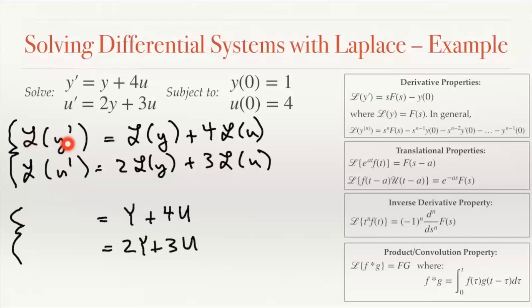The Laplace transform of little y we'll call big Y, and the Laplace transform of little u we'll call big U. For the Laplace transform of y prime, we use the derivative property: that gives s·Y minus y(0). Since y(0) equals 1, and the Laplace transform of u prime is s·U minus u(0), and u(0) equals 4. So we now have a system of algebraic equations and we want to solve for Y and U.